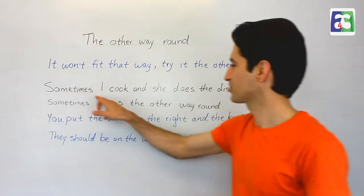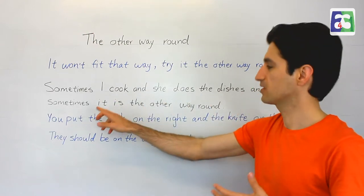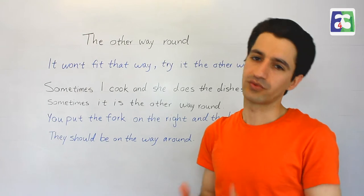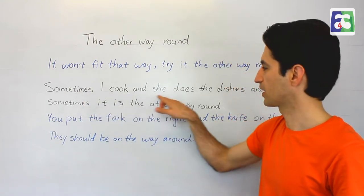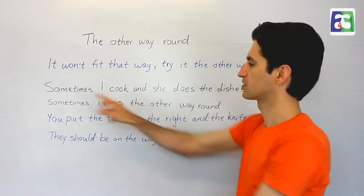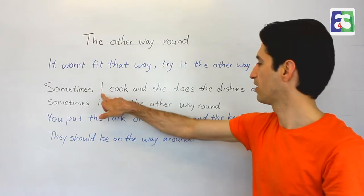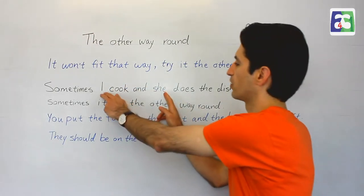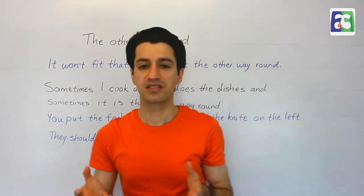Let's look at this example. Sometimes I cook and she does the dishes, and sometimes it is the other way round. Simply means sometimes I cook and she does the dishes, and sometimes she cooks and I do the dishes. So we are changing position. That's it.